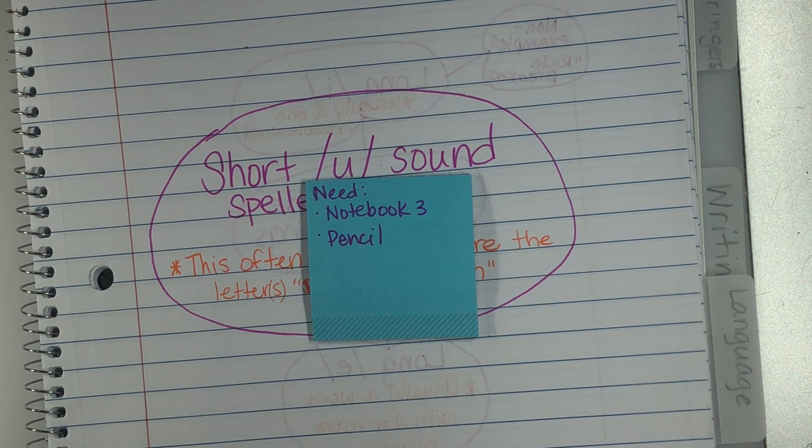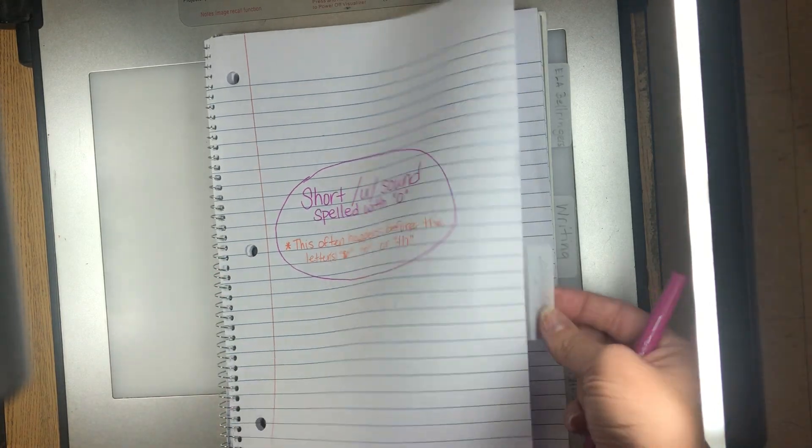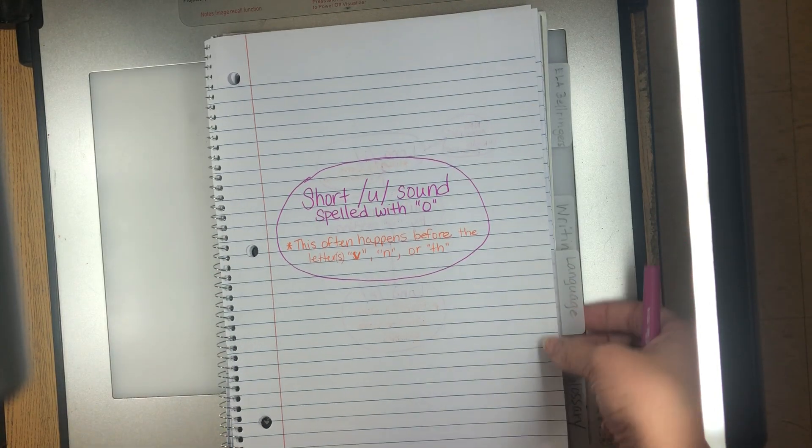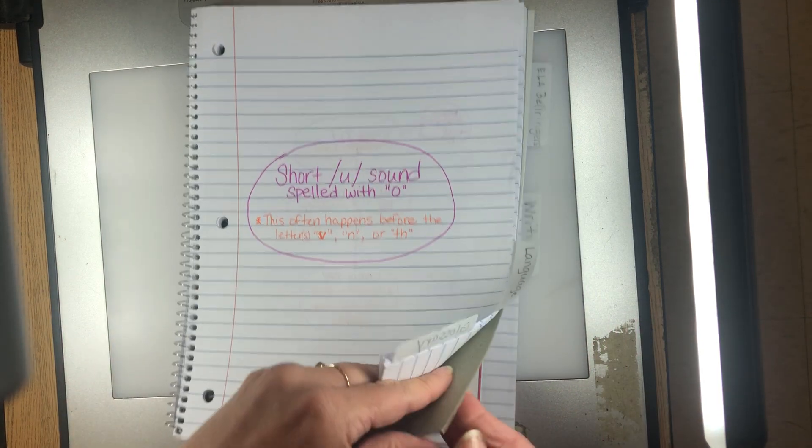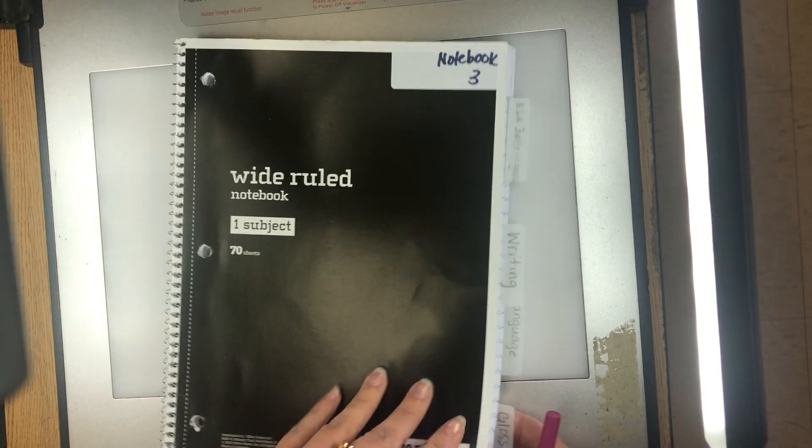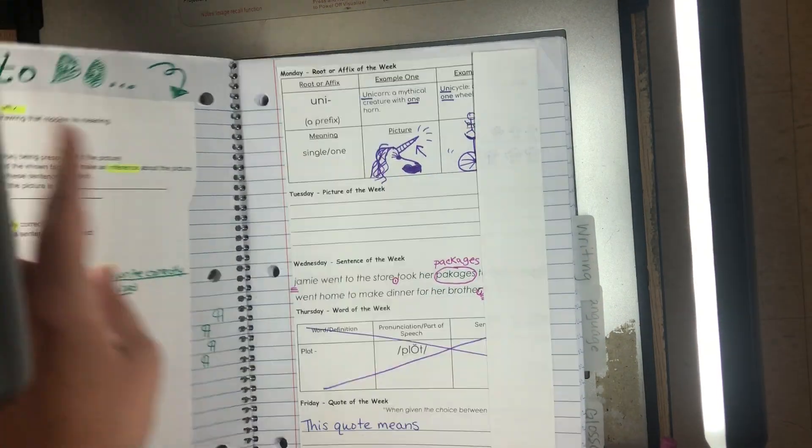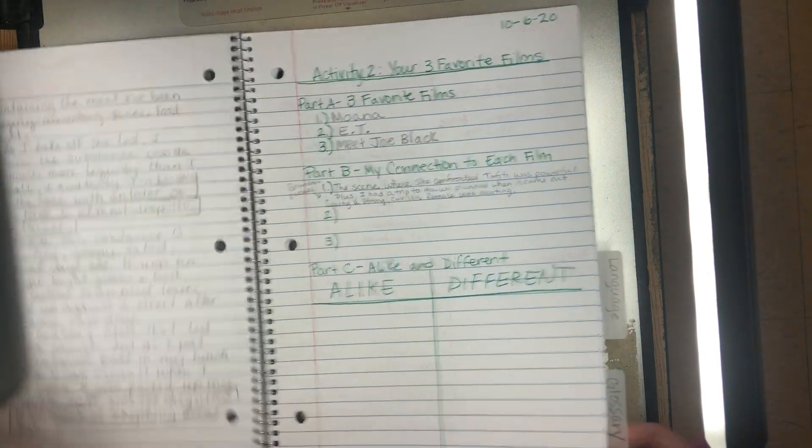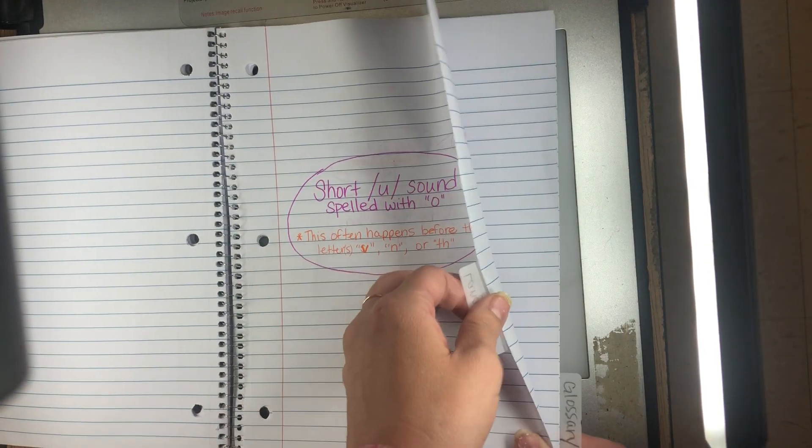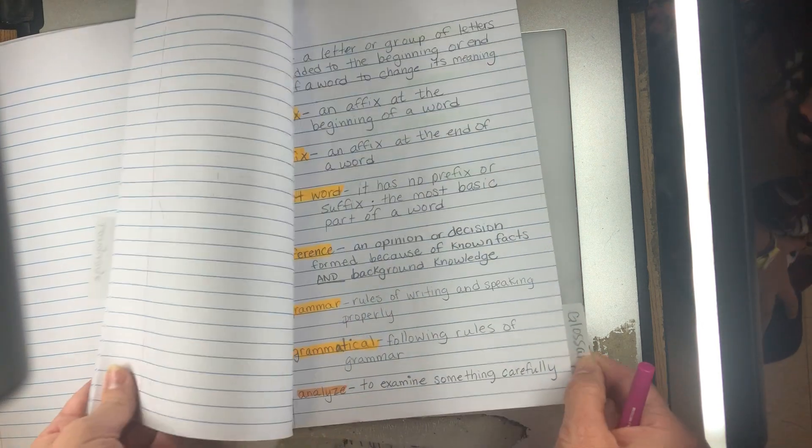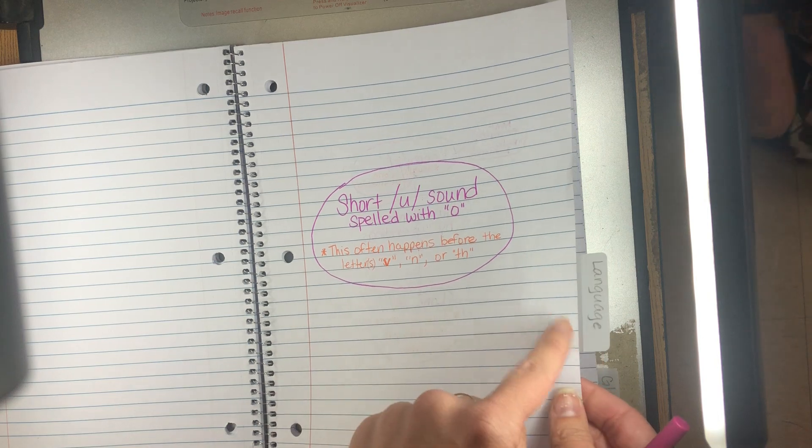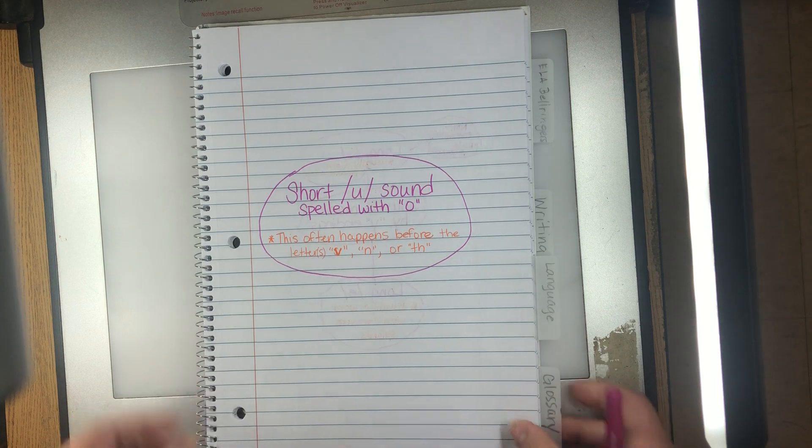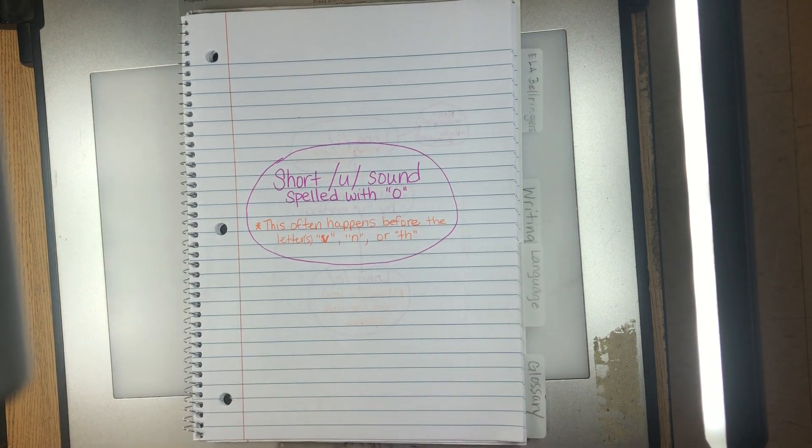Okay, we are actually for the very first time going to use the language tab in our notebook. So just to show you, here is the ELA bell ringers, the writing, and we have language. It's the one before our glossary. So you should have several pages, and the very first page you're gonna write on is the one that has the tab that says language.